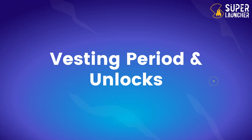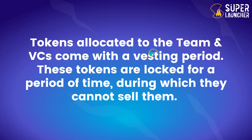Finally, let's talk about vesting period and unlocks. This is very important because when a token is listed on an exchange, not all tokens are in circulation — some are locked. You need to analyze the vesting period to see if there are large quantities of tokens unlocked at a certain moment that could be sold and have a huge negative impact on price. Tokens allocated to the team and VCs come with a vesting period during which they cannot be sold. Longer vesting times usually mean higher commitment from the team.